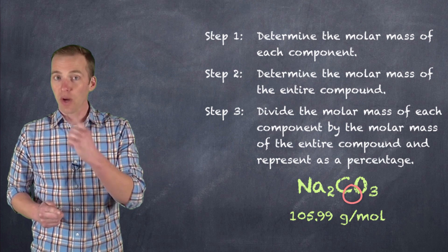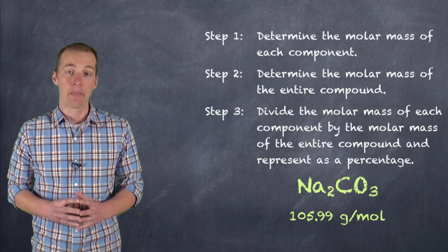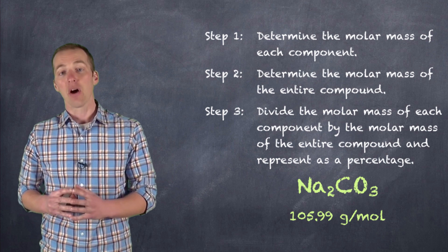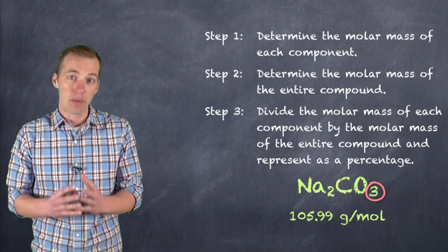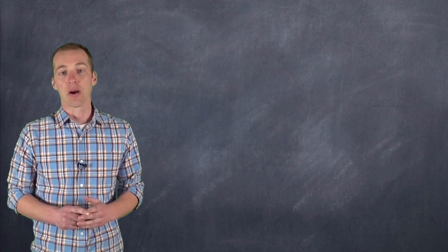When we're comparing carbon, there's only one carbon, so we only need to establish the mass of one carbon as compared to the mass of the sodium carbonate. And with oxygen, there are three oxygens, so we have to use the molar mass of three oxygens and compare that with the overall molar mass of sodium carbonate.